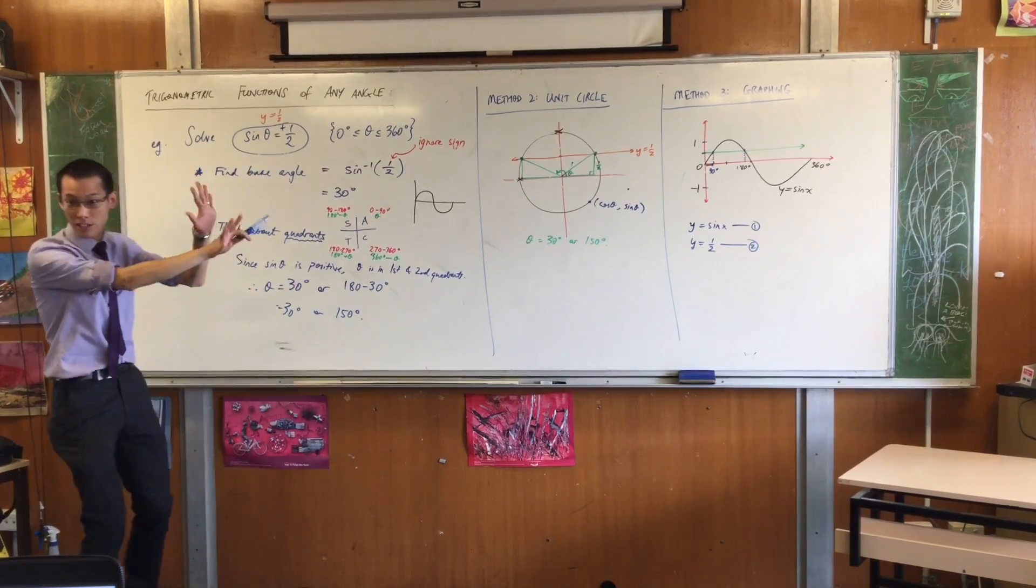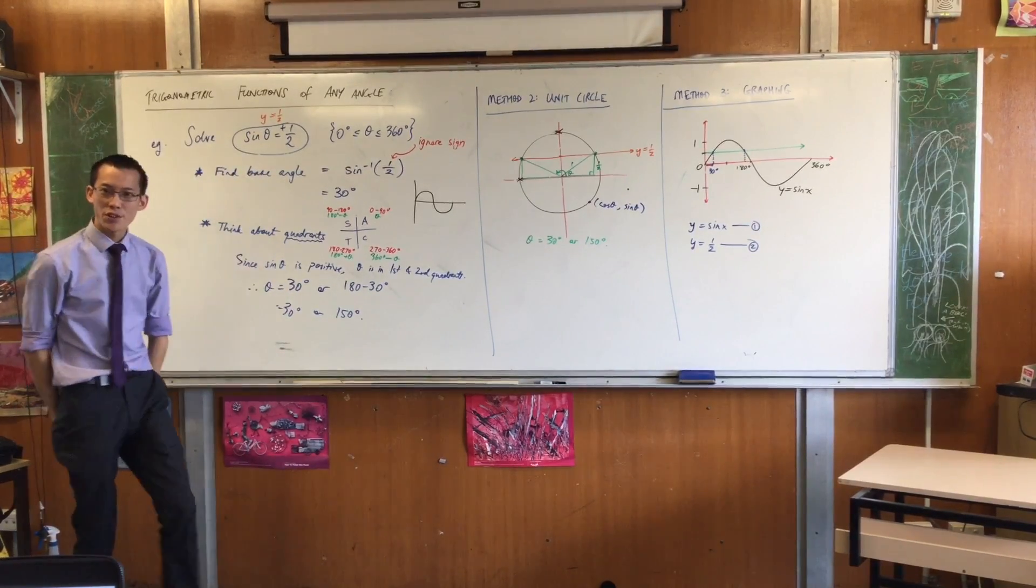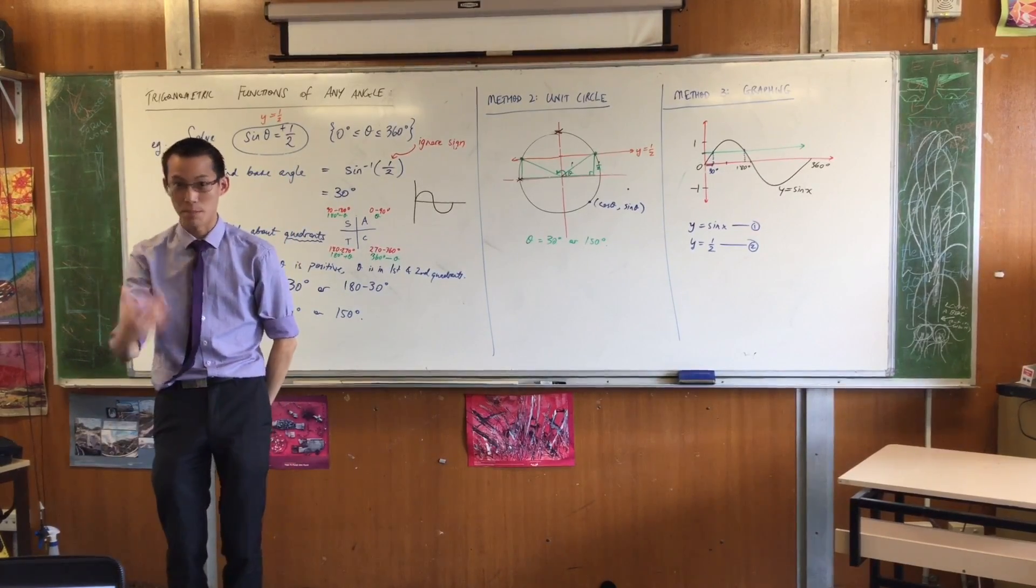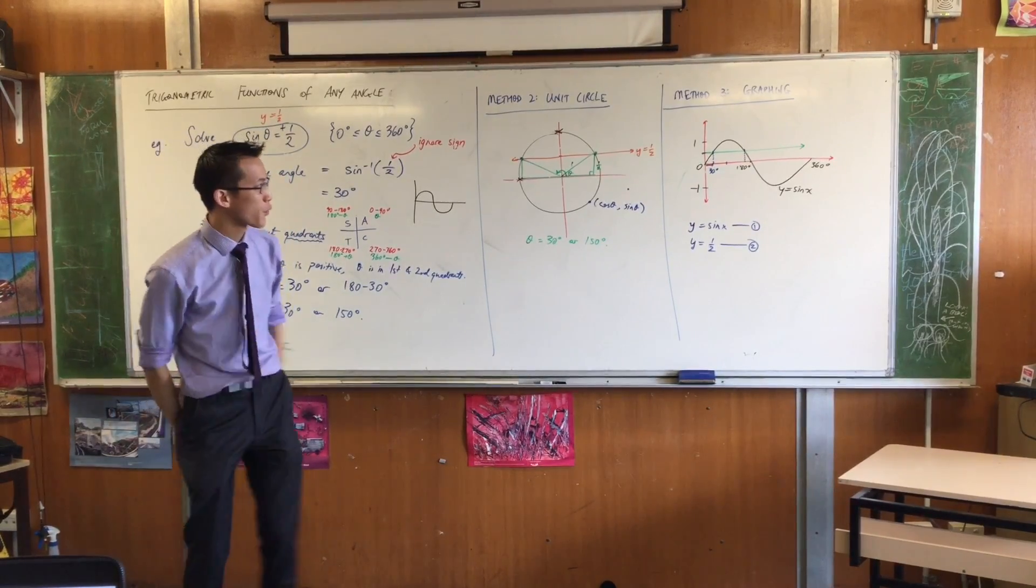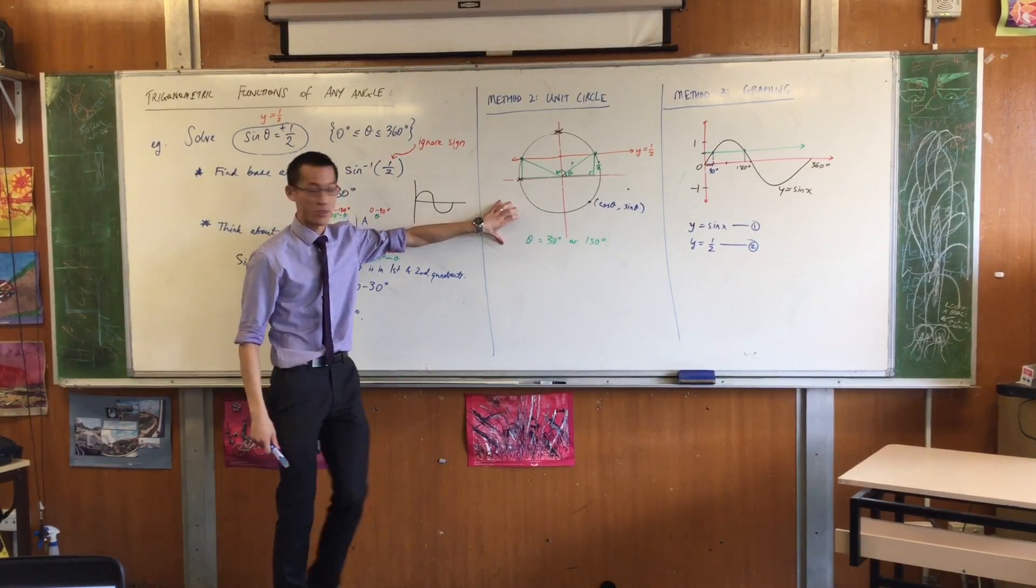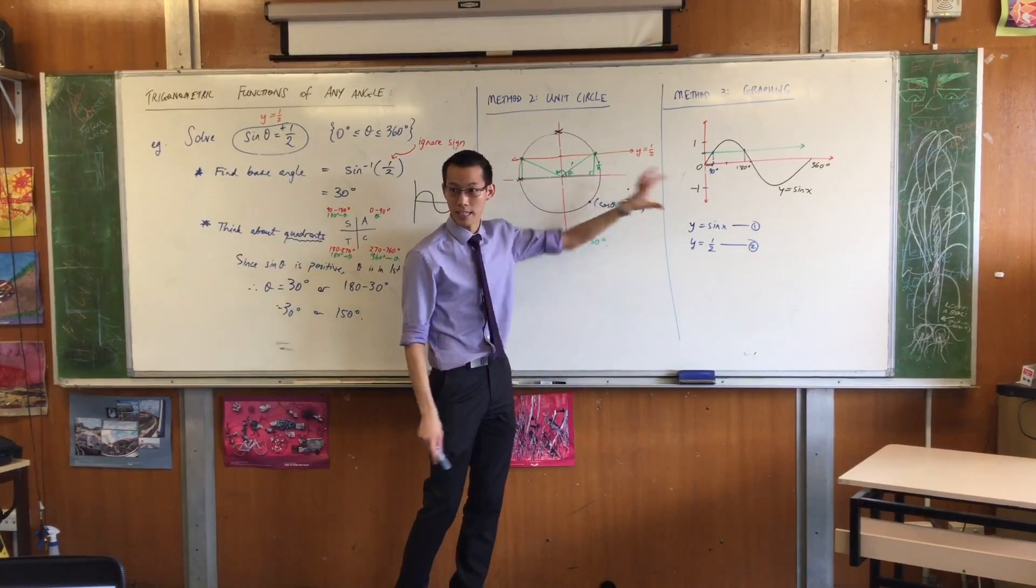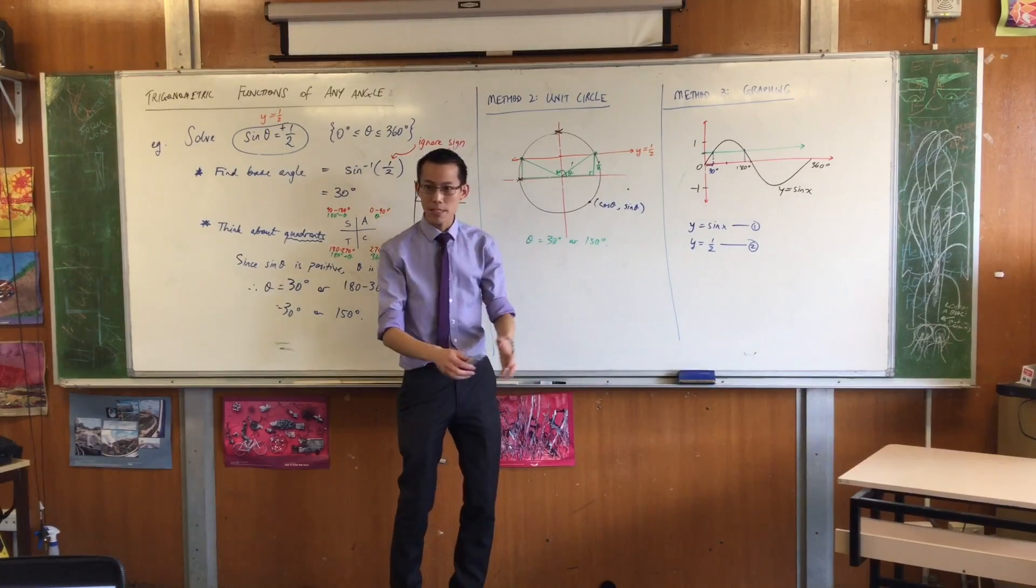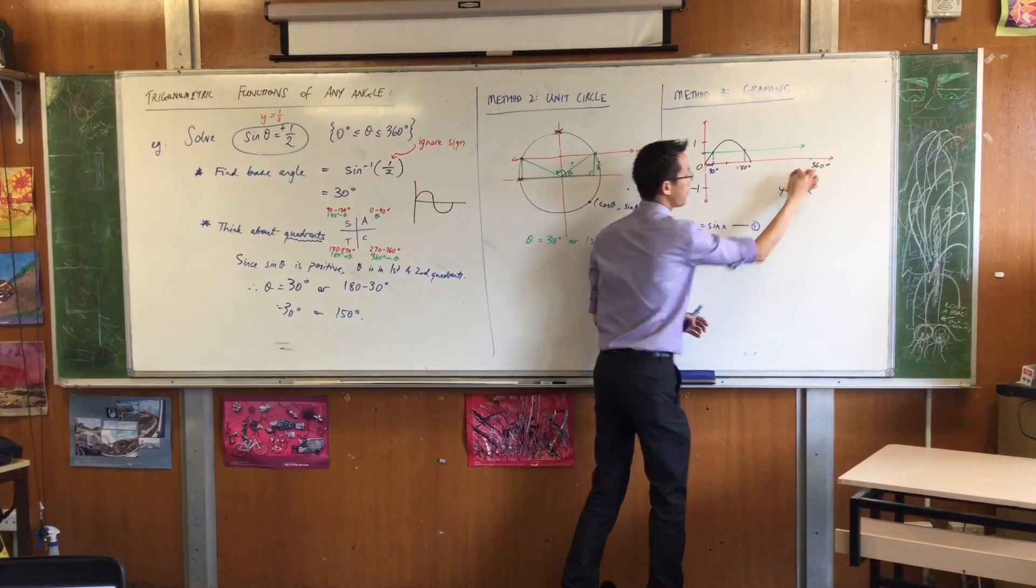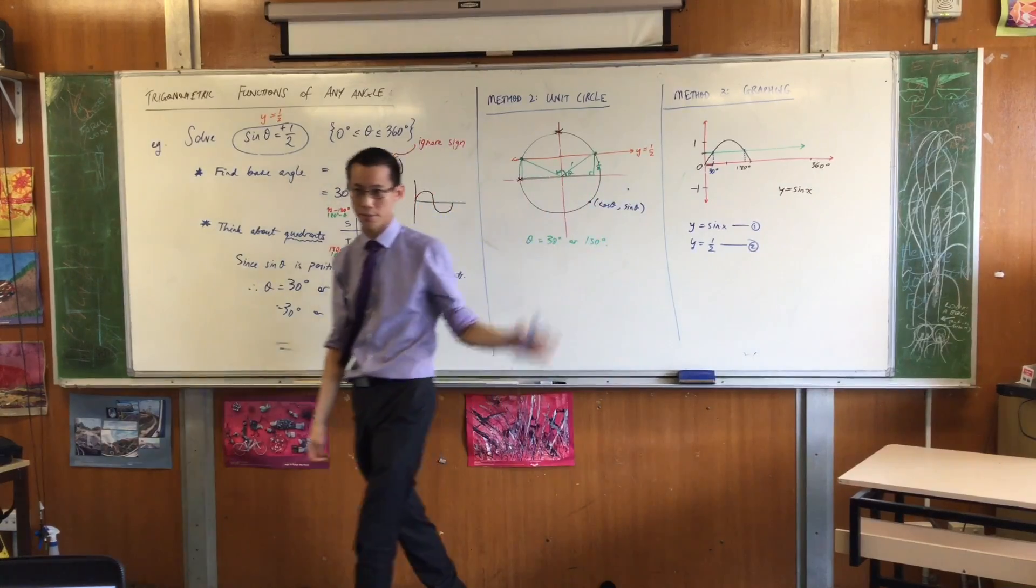Look closely. Do you notice the sine curve has all this wonderful, beautiful symmetry to it? The reason it has so much symmetry to it is that the unit circle has so much symmetry to it. These two things are integrally connected. In particular, just for a second, forget about this part of the graph. Just look at what's left.